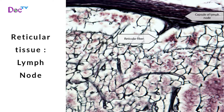Reticular tissue is found in lymph nodes. It has a matrix of reticular fibers and contains many cells, mostly fibroblasts. It forms a soft skeleton to support the lymph nodes, bone marrow and spleen.